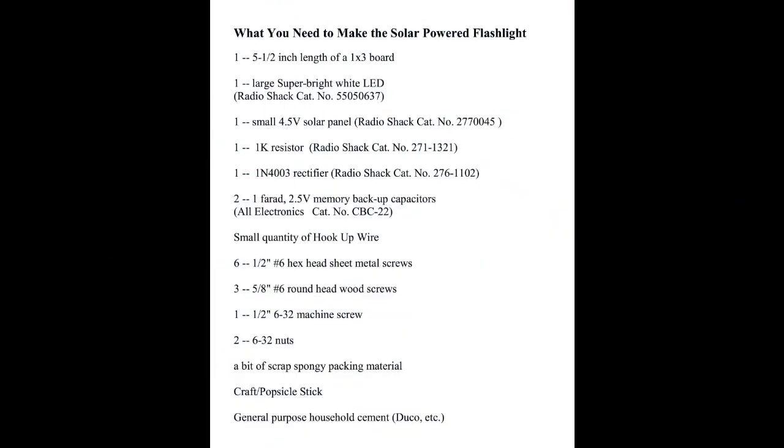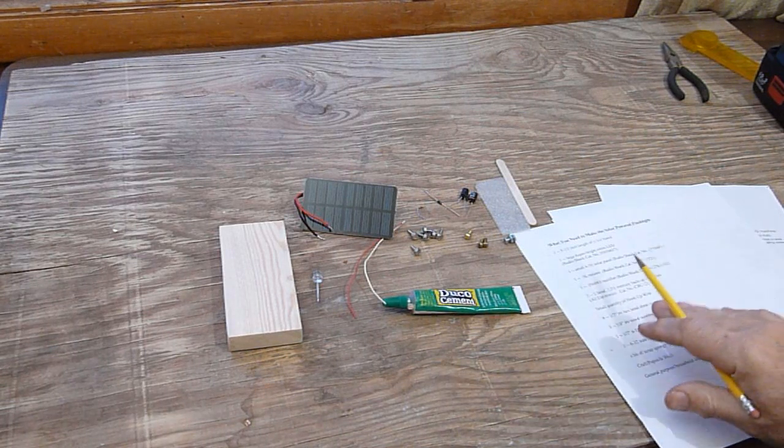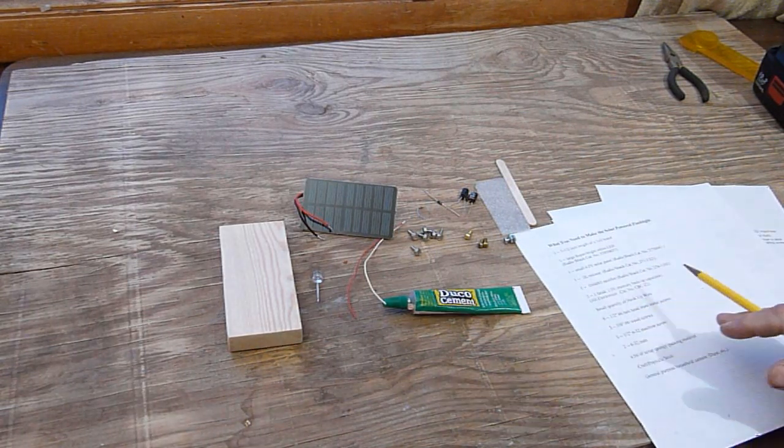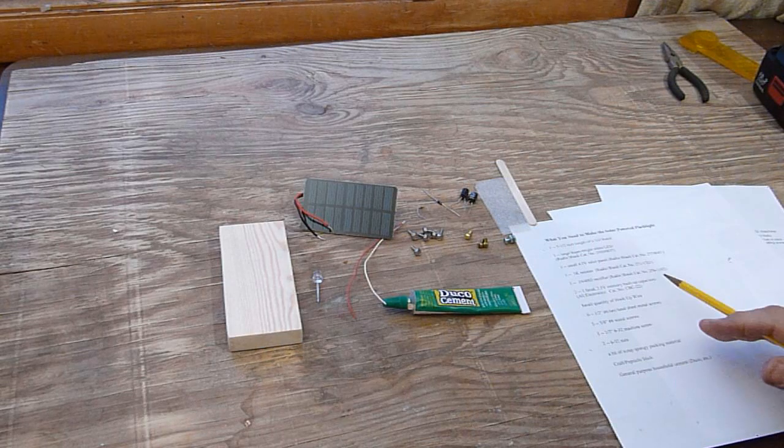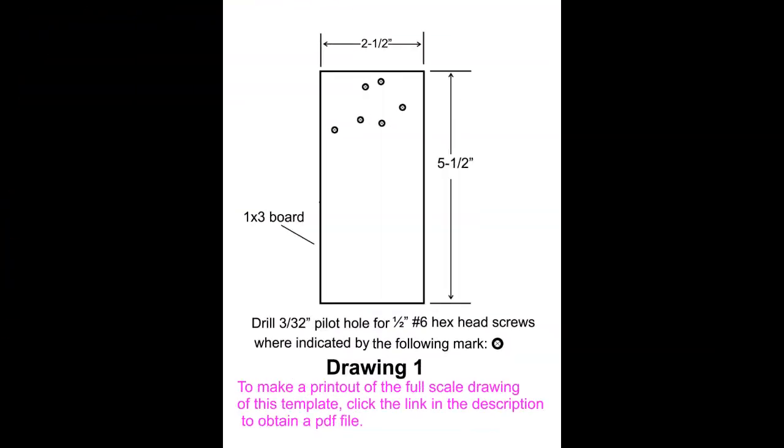This is the parts list for the solar powered flashlight. It is also given in the YouTube description. Here's the stuff we need to make the solar powered flashlight that doesn't use a battery.